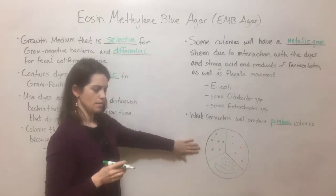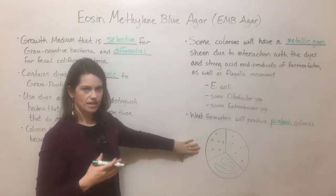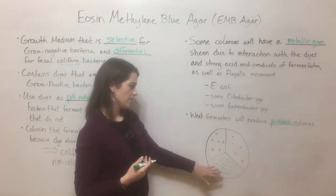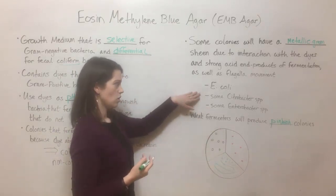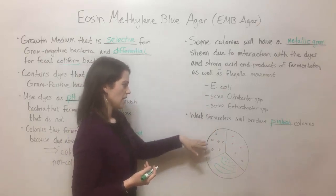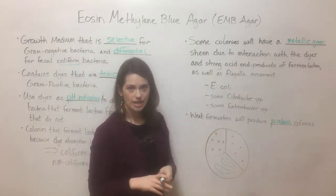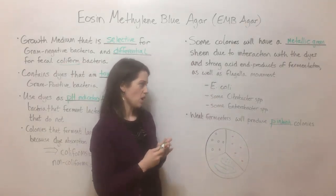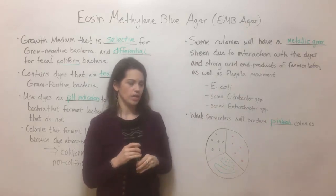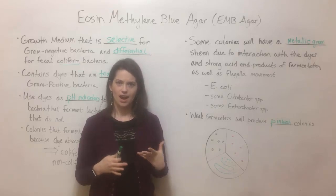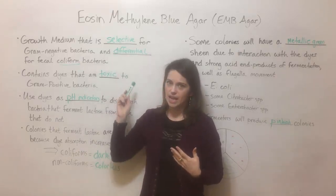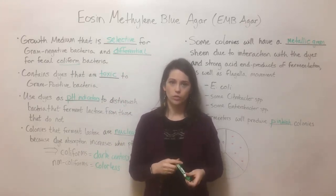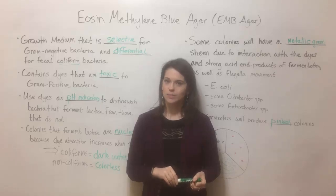From all of this, you can see that EMB agar has a lot of ways to distinguish different kinds of bacteria: if it's a weak fermenter, you'll see a pink color; if there's a metallic green sheen, you know it's going to be one of those specific bacteria; and if it's got a dark colony center, you know it is a coliform. If you're interested in learning about other kinds of selective and differential media, like mannitol salt agar or MacConkey agar, check out my playlist on bacterial growth media. That's it for today — thanks for watching Biology Professor.